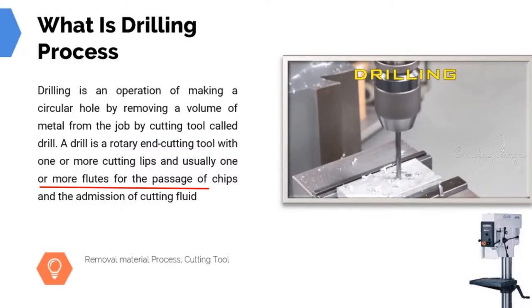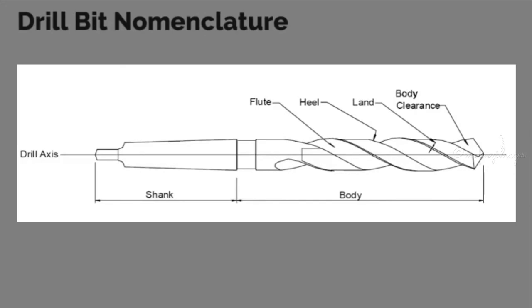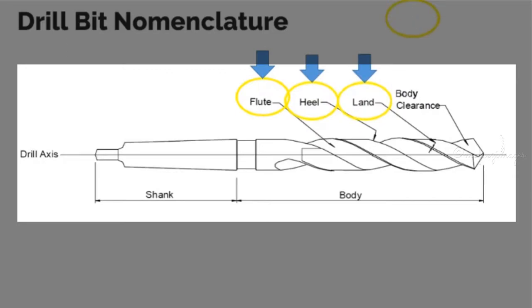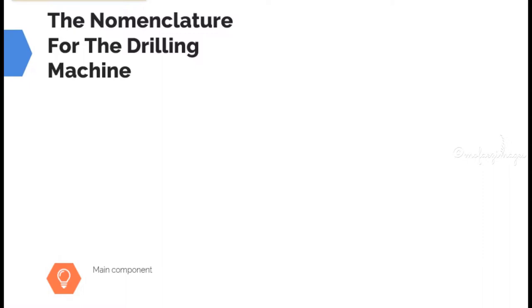The drill usually has one or more flutes for the passage of chips and the admission of cutting fluid. Now let's start with the drill bit nomenclature. The parts include: the flute, the heel, the land, the body clearance, the body, and also the shank.